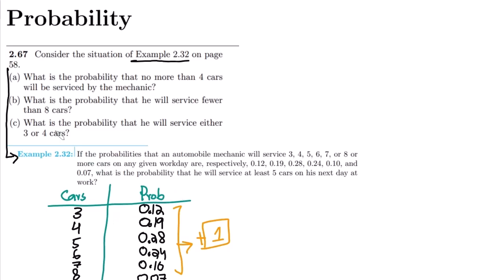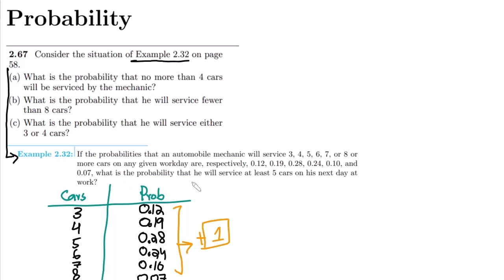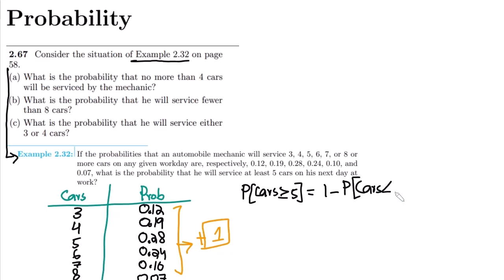Now, on the basis of this, what do I have to find in this example? I have to find the probability that the mechanic will serve at least 5 cars on his next workday — that is, P(cars ≥ 5). This can also be written as 1 minus the probability that he will service fewer than 5 cars.